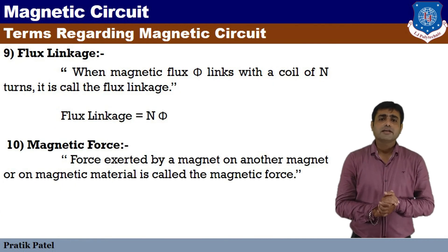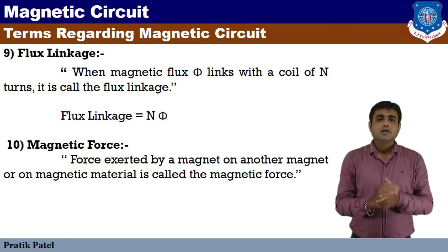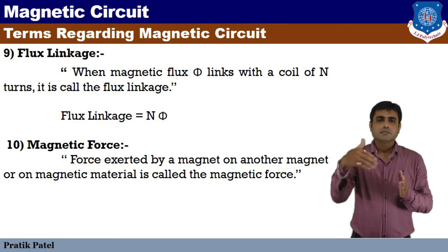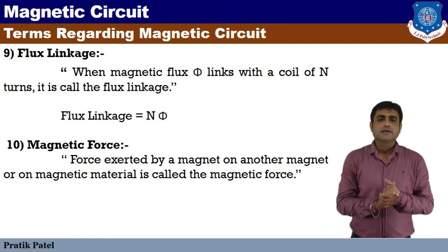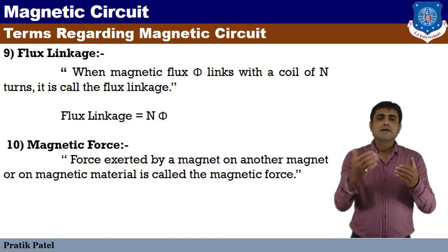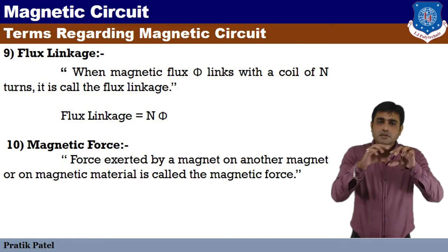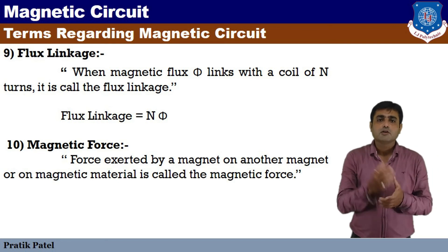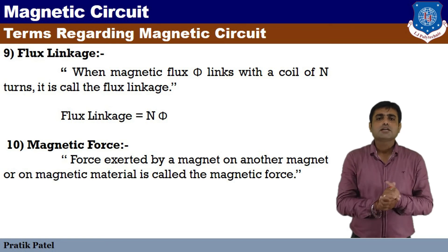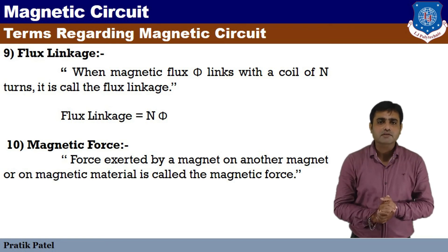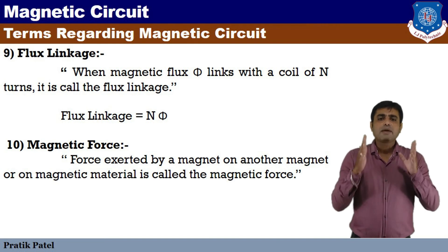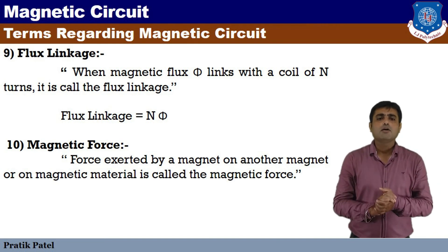Next is flux linkage. When a magnetic flux phi links with a coil of N turns, the product of N and phi is called flux linkage. So flux linkage is equal to N into phi.